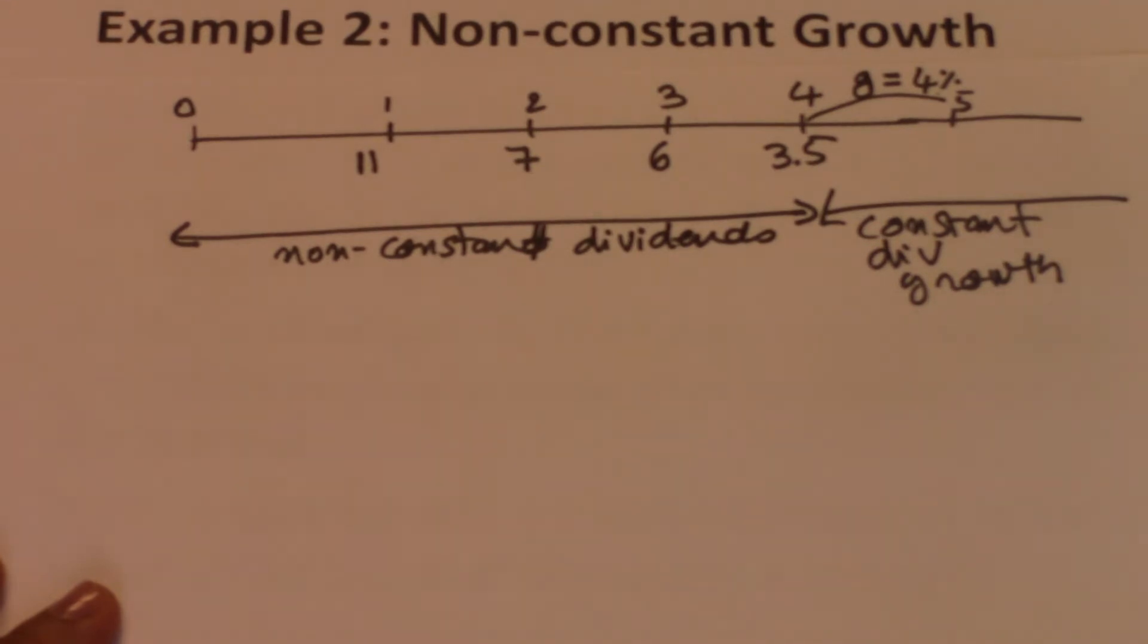At the end of year 4, the dividends start growing constantly over time. We can use the constant dividend growth model to determine P4.